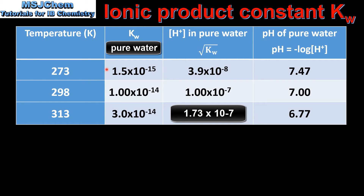This is because the dissociation of water is endothermic and an increase in temperature will shift the equilibrium to the right. If we take the square root of Kw we can calculate the concentration of hydrogen ions in pure water. As the temperature increases the concentration of hydrogen ions also increases. If we calculate the pH of pure water using pH equals the negative log of the hydrogen ion concentration, we can see that as the temperature increases the pH decreases.